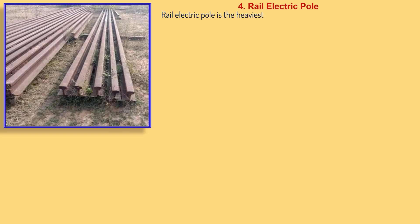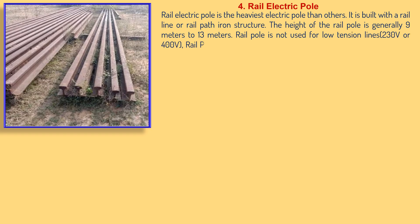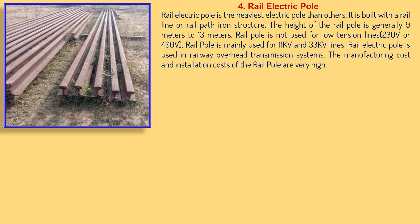The rail electric pole is the heaviest electric pole. It is built with a rail line or rail path iron structure. The height of the rail pole is generally 9 to 13 metres. A rail pole is not used for low-tension lines like 230V or 400V; it is mainly used for 11kV and 33kV lines. It is also used in railway overhead transmission line systems. The manufacturing and installation cost of the rail pole are very high. These poles are used in cities, urban areas, near highway crossings, and for 11kV, 33kV, and 66kV.